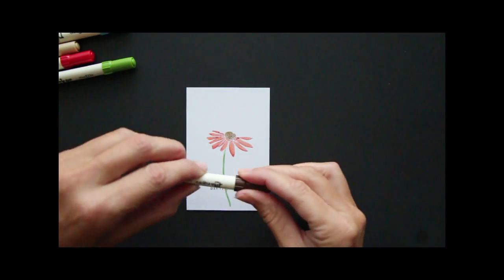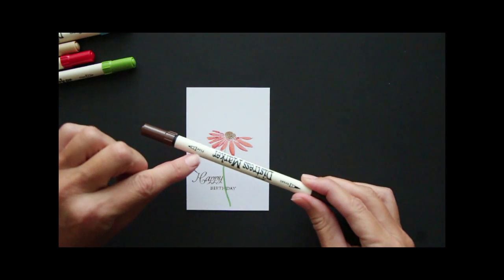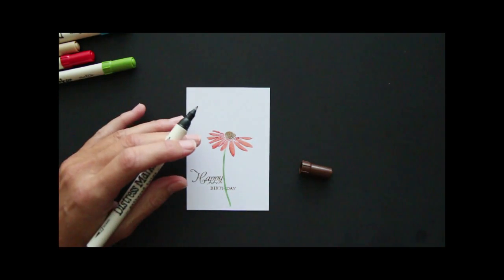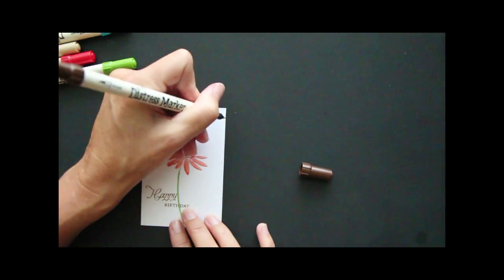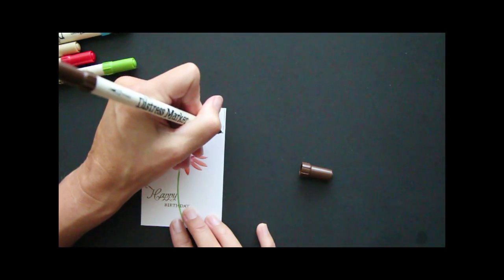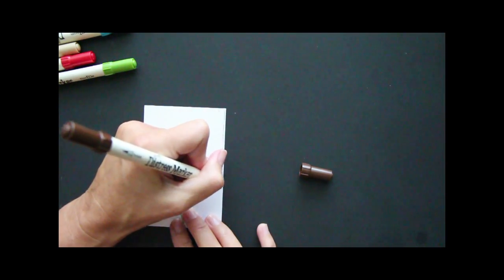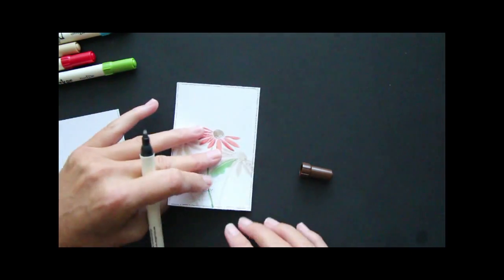Now these markers, a lot of water-based markers, come with a brush tip as well as a fine tip. And this fine tip is great for writing your own sentiments or drawing your own images, or even what I like to do is doodle. So I'm just going to add a little doodle border to this, and go all the way around.